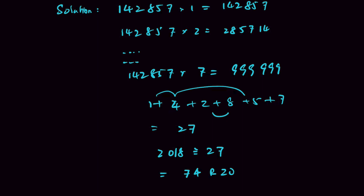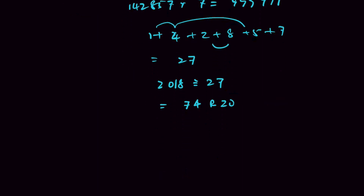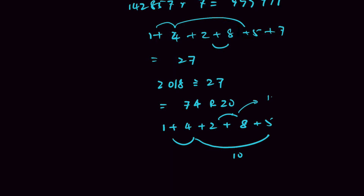So when do we get a partial sum of 20? That is: 1 + 4 + 2 + 8 + 5 = 20. So the last digit when the sum reaches 2018 is the digit 5.